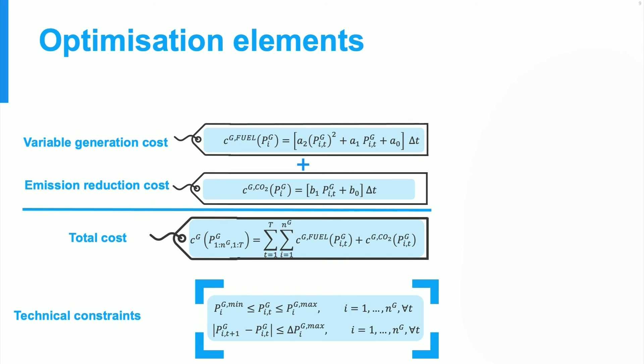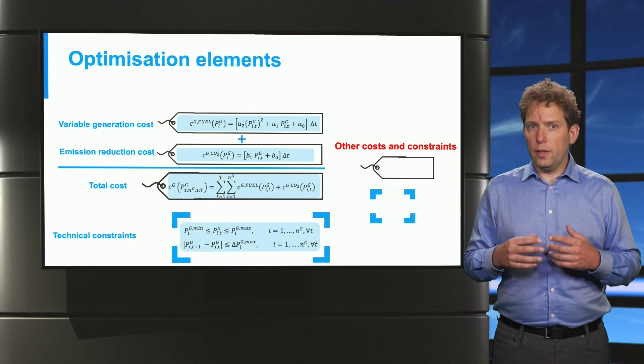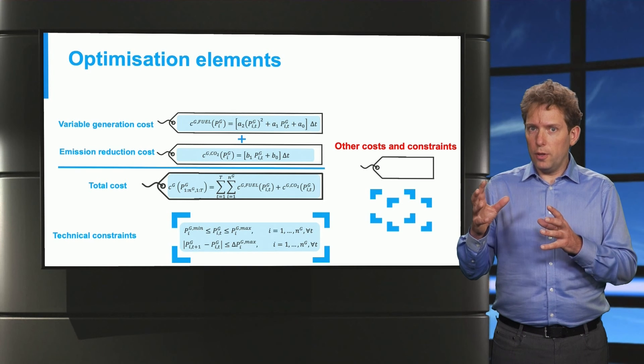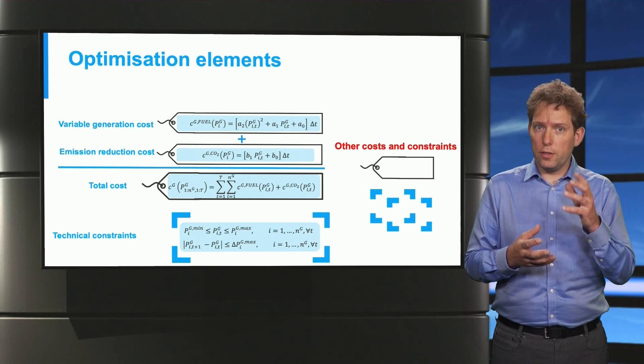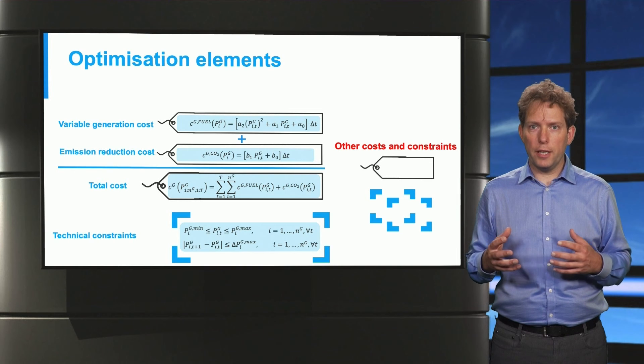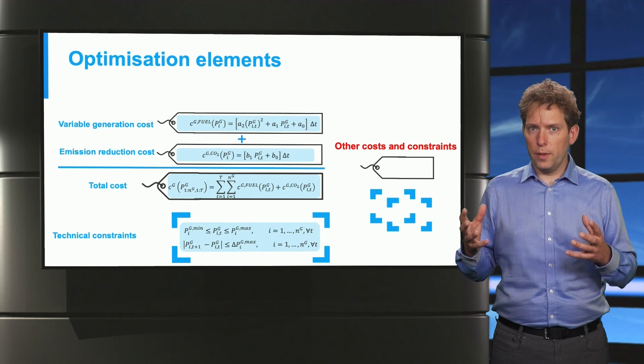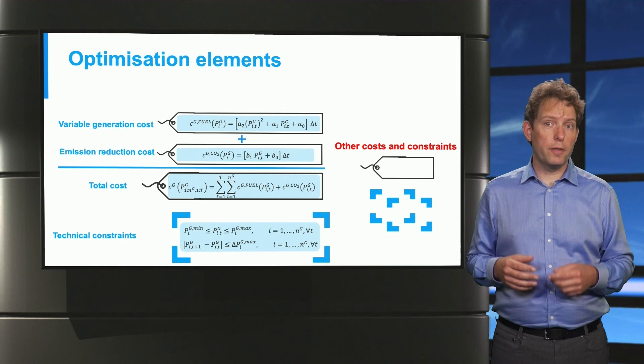In addition, there are technical constraints that we need to keep in mind. Now, in addition to these building blocks, we can add costs and constraints from other elements in our system. And we will be in a position to calculate the economic dispatch for the whole system. But that calculation itself is not covered in this video.